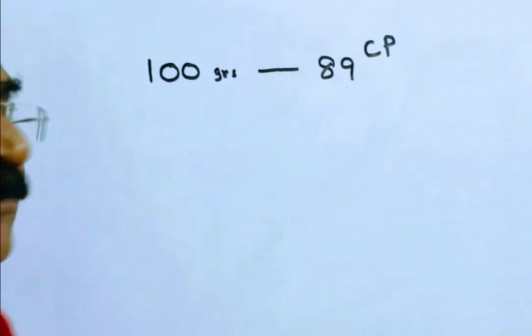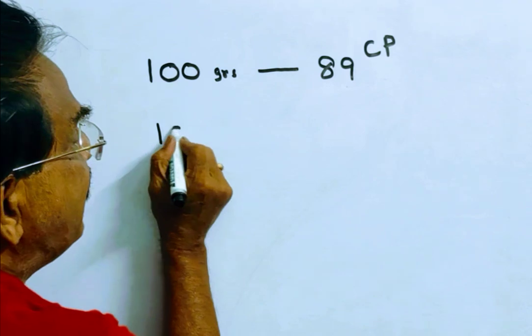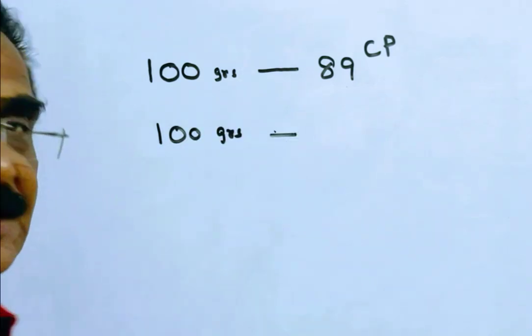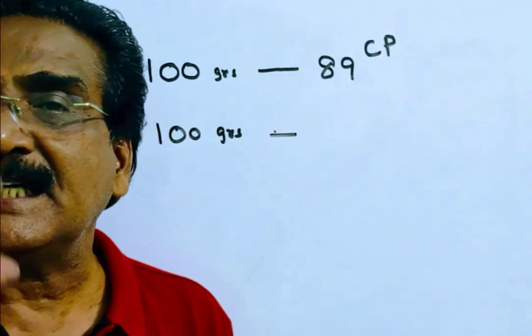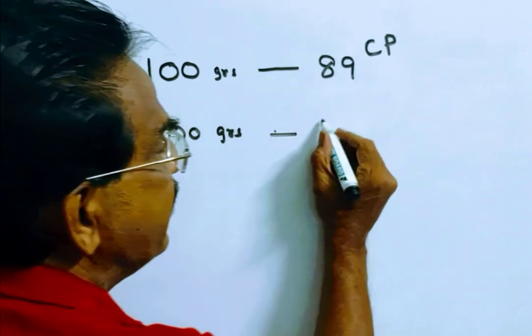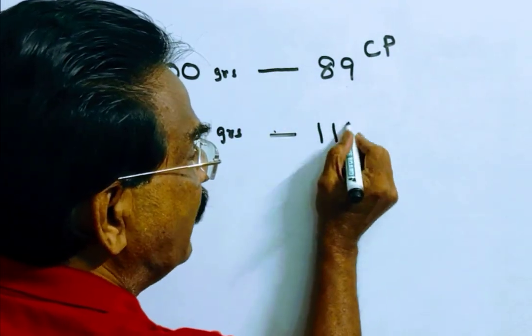This is while buying. Now he has 100 grams worth of goods. While selling also, he is cheating to the extent of 11% by using tampered weights. So 11% means he is selling this 100 grams worth at Rs. 111.